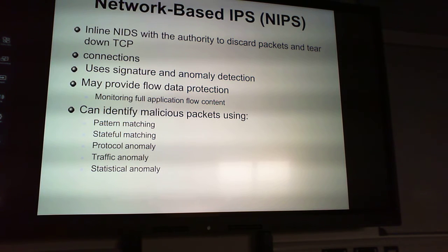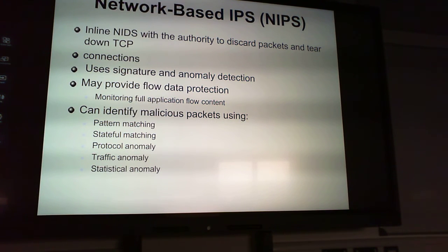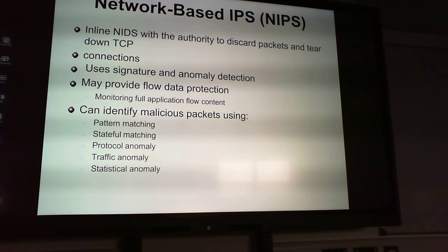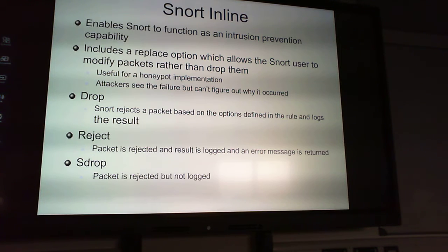Identifying malicious packets uses stateful matching, protocol anomaly detection — for example, flagging FTP traffic on a network that doesn't allow FTP — and traffic anomaly, such as 10,000 packets from an IP address that normally only transmits 5,000. These are statistical anomalies based on traffic pattern or behavior.